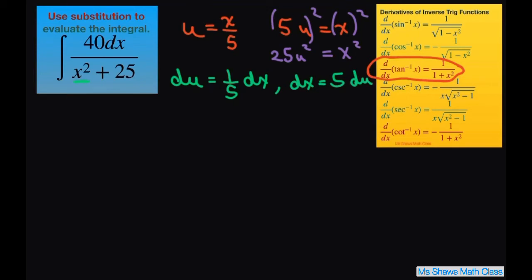Now we can write everything in terms of u. So this is our integral. We want to write everything in terms of u. So we have 40 times dx. Well dx is 5du. Then you have your x squared. We know our x squared is 25u squared. And then we still have our 25 here.